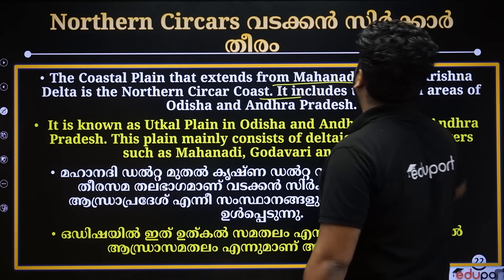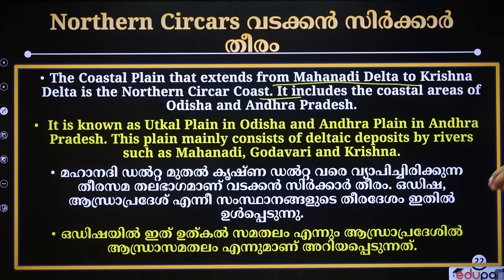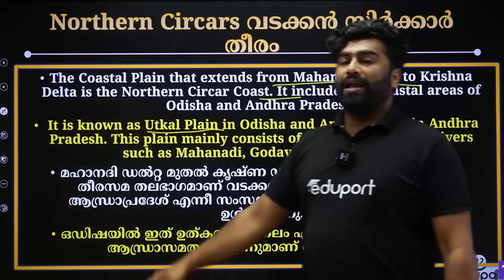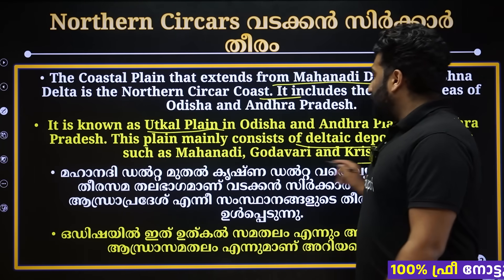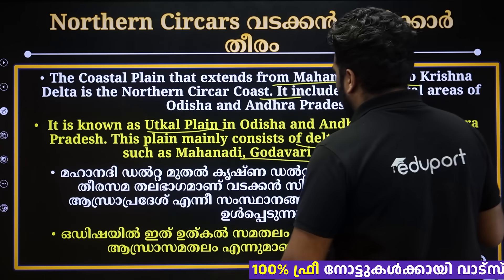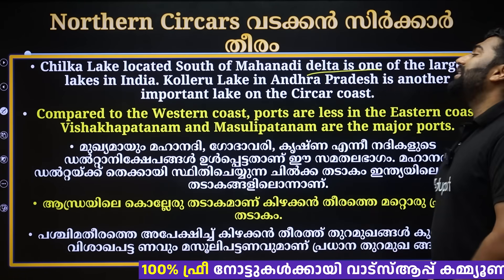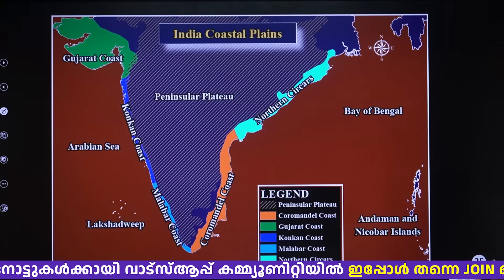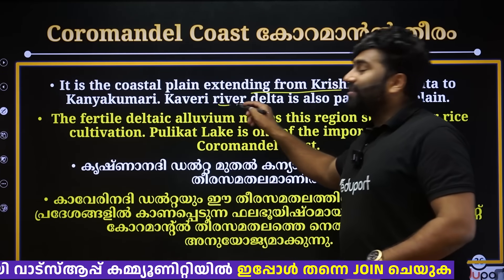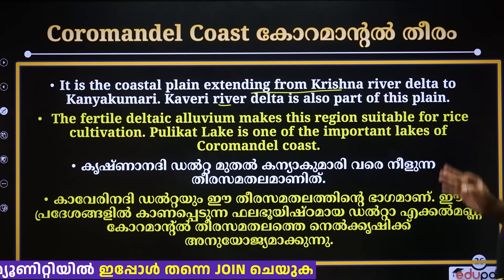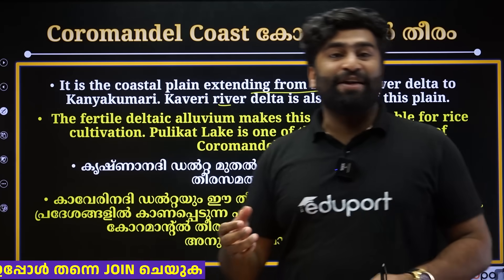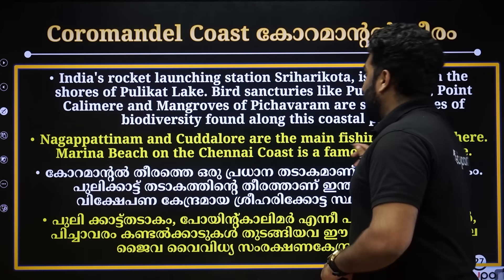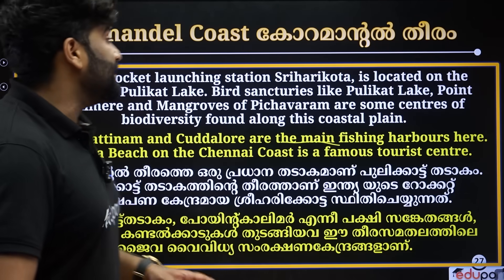The coastal plain that extends from the Mahanadi delta to the Krishna delta is known as Northern Cirkar. It is about 50 metres wide in places. Moving further south, we come to the Mahanadi region. Sriharikota and the Pulicat Lake are important features here. This is also home to a fishing harbour and the Marina Beach.